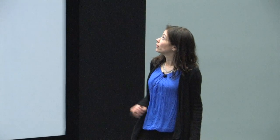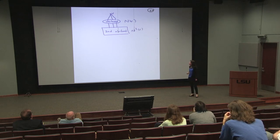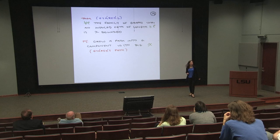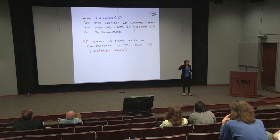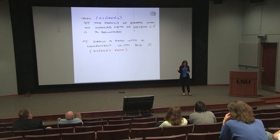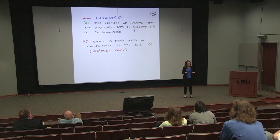Now Gyárfás's third conjecture says that if you forbid all long odd holes, the chromatic number is bounded. About 15–20 years ago, Alex Scott proved a common weakening of the two conjectures — instead of a common strengthening. He proved that if you forbid all long holes and you also forbid all odd holes, then the class you get is chi-bounded. That proof is very nice, and I'm actually going to show it. One thing we'll need is the second neighbourhood of a vertex: vertices not adjacent to v but which have neighbours in v's neighbourhood — people at distance 2.